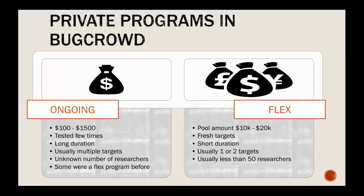In a blitz program, the pool amount is better — usually around $10K to $20K — and it's usually a fresh target. The duration is typically one to two weeks and usually contains only one or two targets, being tested in parallel by at least 25 to 70 researchers at the same time. That's why sometimes your account gets deleted or the password gets changed — because some people play dirty when the pool amount is big.